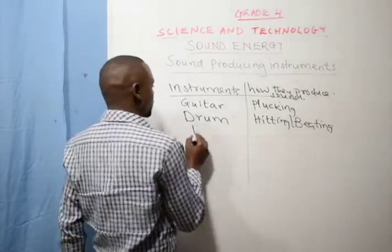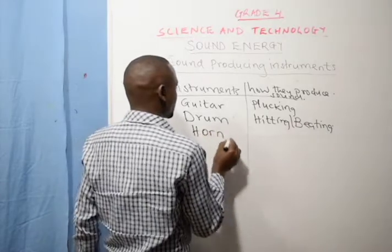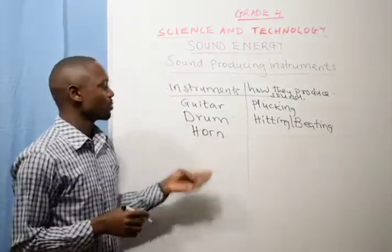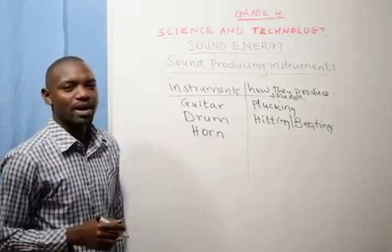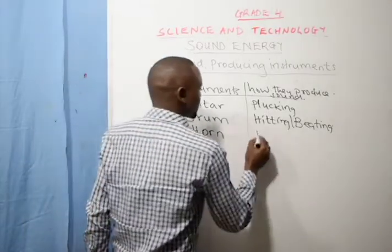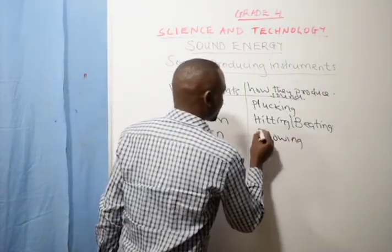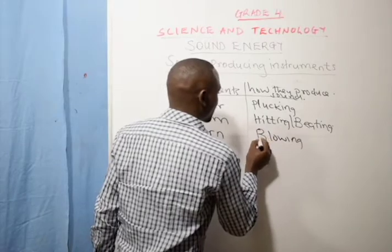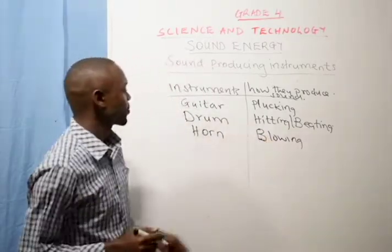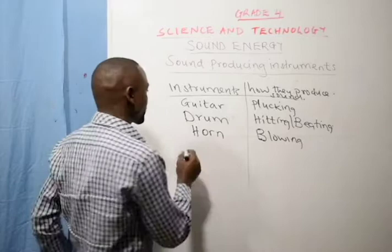We also have something called the horn. How does a horn produce sound? A horn will produce sound by blowing. This is used especially when singing traditional songs. A horn will produce sound when blown.